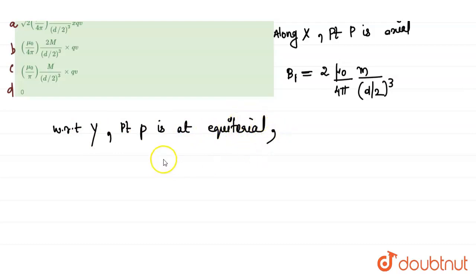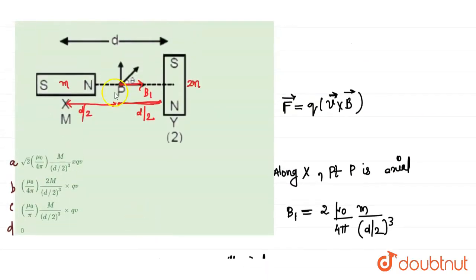So its magnetic field is, let it be B2, it is given by mu 0 by 4 pi, its magnetic moment is 2M, distance is D by 2 all cube. From this equation, it is clear that B1 is equal to B2. So B2 is towards the axial point and B1 is towards the perpendicular component. So its net magnetic field is given by B net.